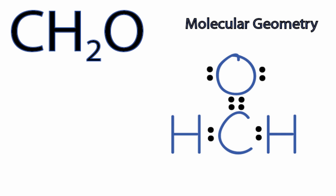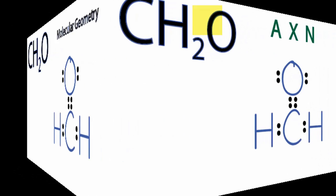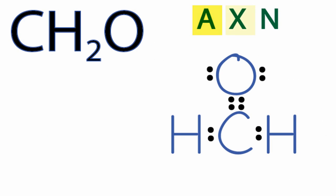But let's use the AXN notation to make sure. A, that's going to be that carbon there in the center. X, that's the number of atoms bonded to the carbon. We have two hydrogens and one oxygen. That's going to be a three. And then N, that's the number of non-bonding electron pairs on the carbon. For that central carbon, all of those electron pairs are involved in bonds, so we can just ignore N.